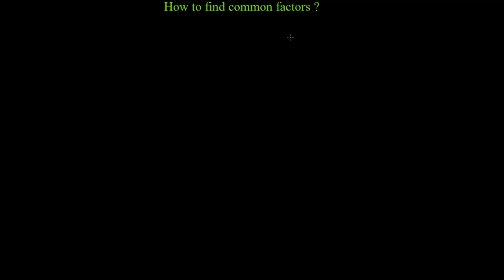For example, if I have the number 10, what are the factors of 10? Those numbers which can divide 10 without any remainder are its factors. Like 1 — 1 times 10 equals 10. Similarly, 2 — 2 times 5 equals 10. And 5 — 5 times 2 equals 10. Also, 10 itself is a factor of 10 because 10 times 1 equals 10. So 1, 2, 5, and 10 are the factors of 10.